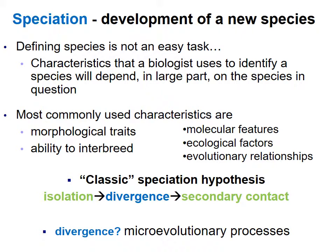The classic speciation hypothesis is that you have isolated populations that diverge, and then on secondary contact they are no longer considered the same species. The divergence is driven by microevolutionary processes we talked about in previous chapters — natural selection, sexual selection, mutation, and so forth.